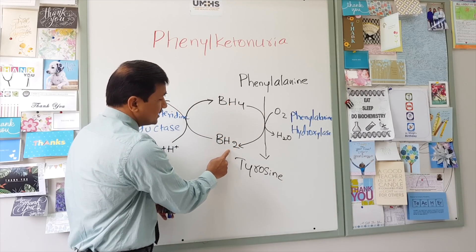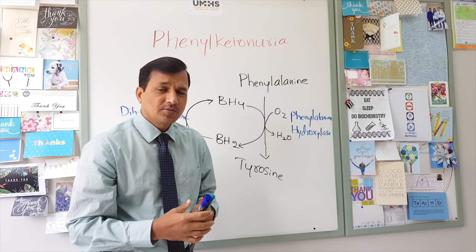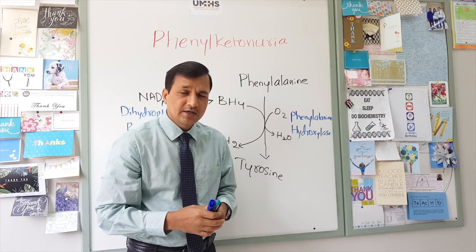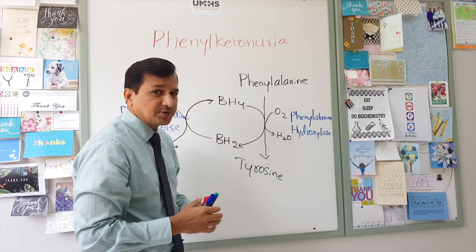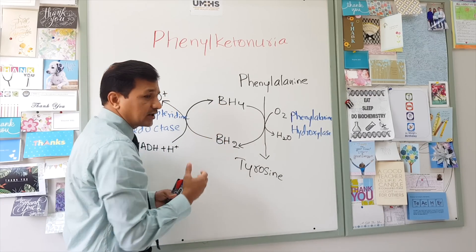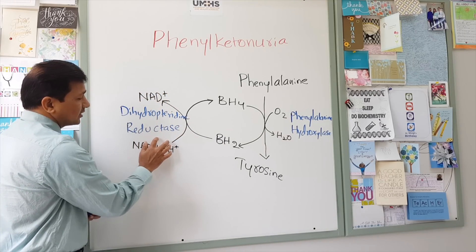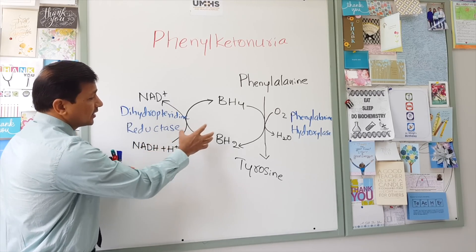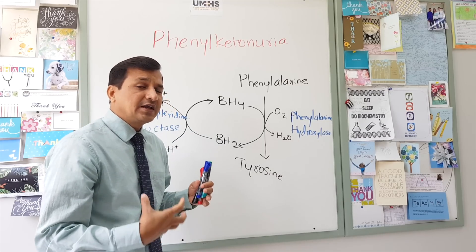During this process, tetrahydrobiopterin is released as dihydrobiopterin. Since there are limited quantities of tetrahydrobiopterin in our body, whenever it is oxidized to dihydrobiopterin, we need to regenerate it back. This regeneration is performed by an enzyme called dihydropteridine reductase, which takes protons from NADH and donates them to BH2, converting it back to BH4.